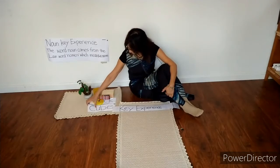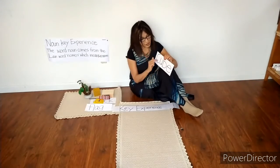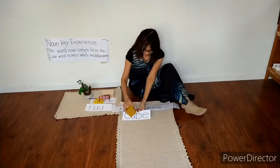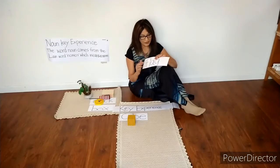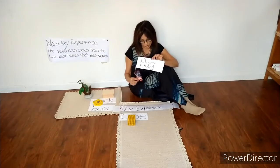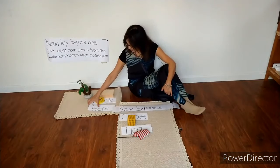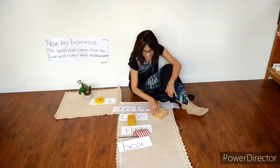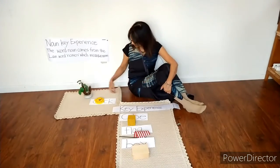If I ask a child, give me Q, he knows what he needs to bring to me. He will bring Q. Now he knows what to bring to me — he knows the name of the object, so he will bring the right object.